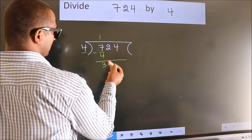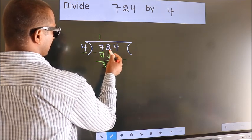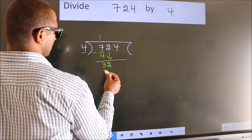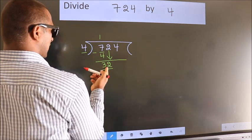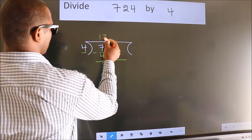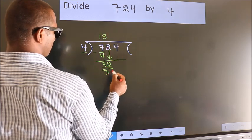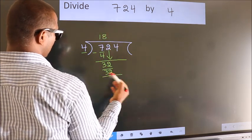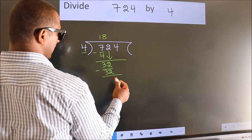After this, bring down the beside number. So 2 down, so 32. When do we get 32? In 4 table. 4 8s, 32. Now we subtract. We get 0.